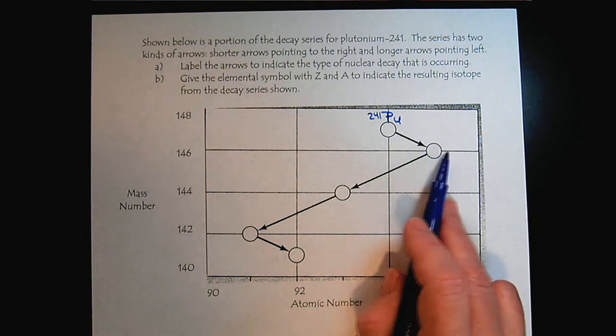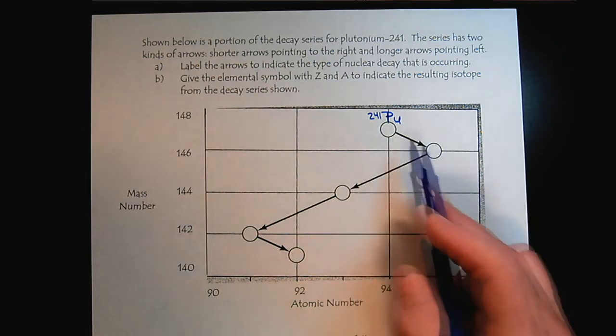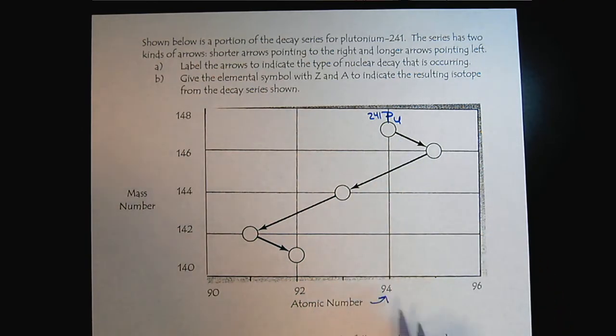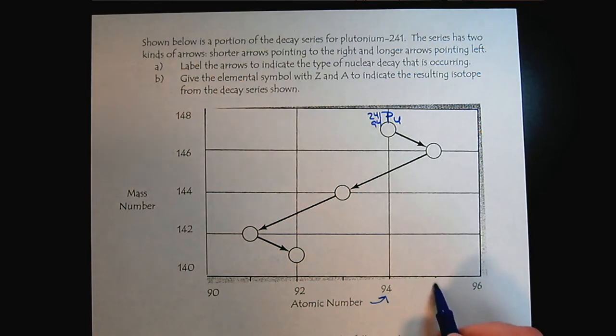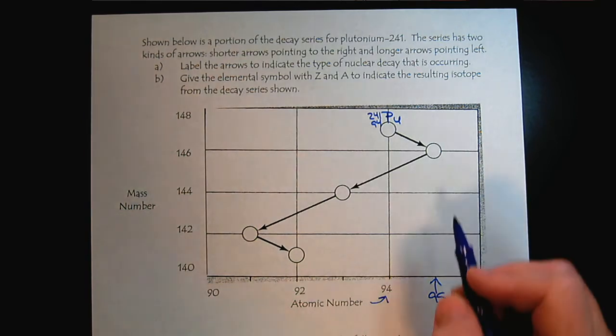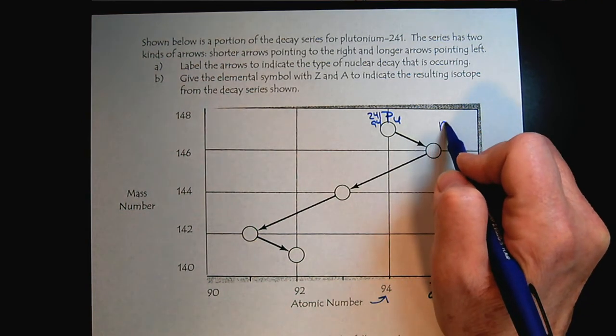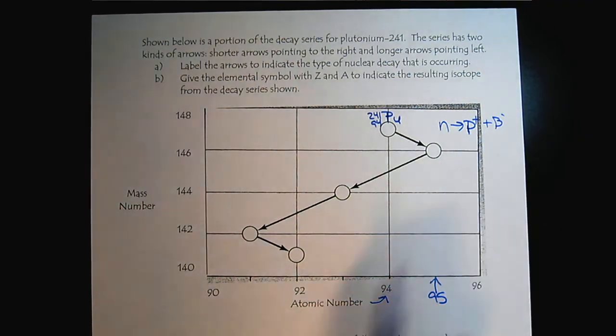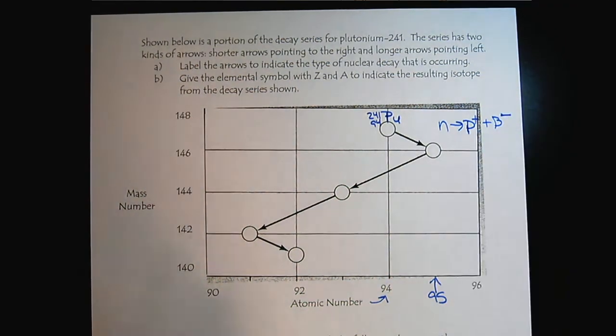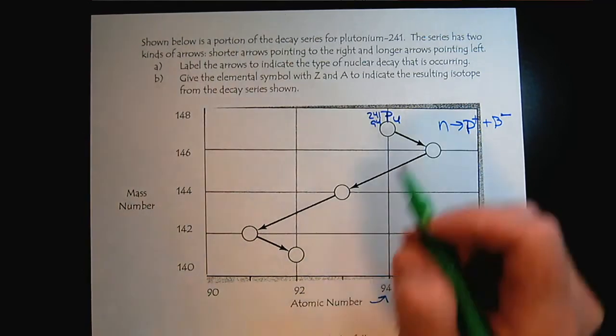And then we notice that it goes, there's our atomic number, would be 94, and then what did we do? We went to 95. So what can we see? You see that a neutron became a proton, and we lost a beta particle. So there is our beta decay.